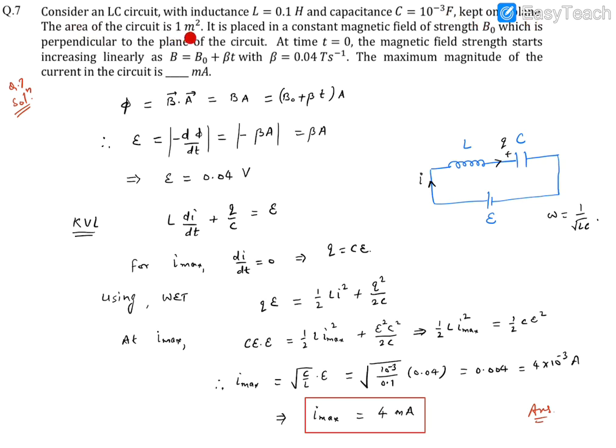The area of the circuit is 1 meter square. It is placed in a constant magnetic field of strength B₀ which is perpendicular to the plane of the circuit.